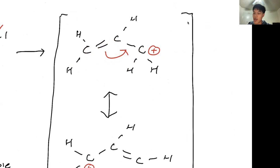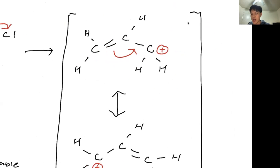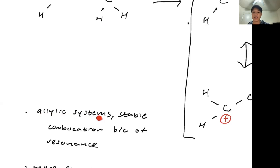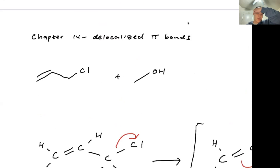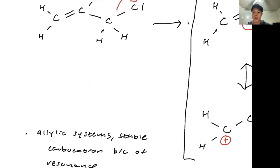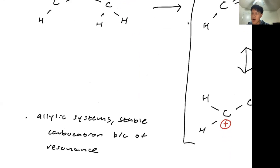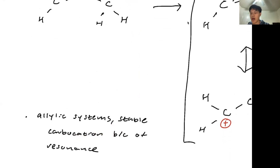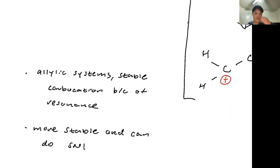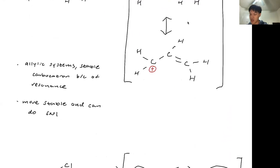There is actually a name for these types of systems. If you have a carbocation and right next to it — one carbon next to it — you have a double bond that can donate its electron density, it's called an allylic system. These allylic systems form a carbocation as the leaving group leaves, and right next to it there's a double bond, making this an allylic carbon. Because of that double bond, it can form stable carbocations because of resonance. That's why we can do SN1 reactions.